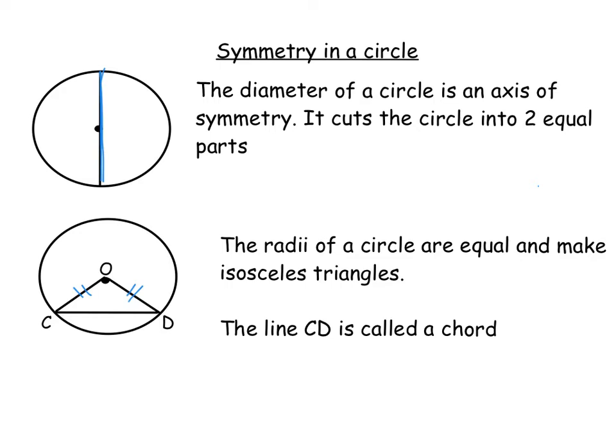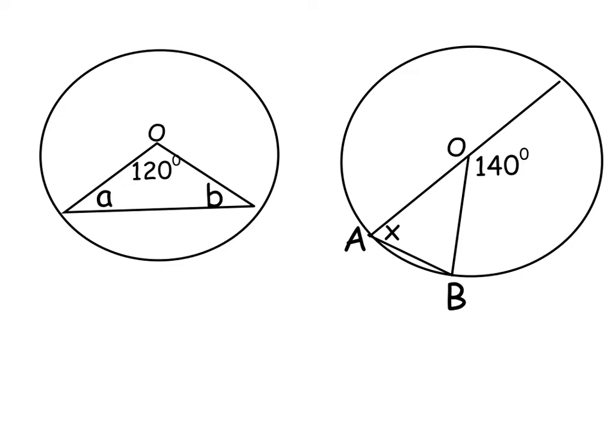So we are going to be looking for radii for the next couple of examples to identify isosceles triangles. So I've got two examples here and what I'm after are the missing angles. So on this one from O to the outside we have an isosceles triangle there. The other two angles A and B are obviously matching using the line of symmetry that's running down the middle. So to get them we're going to do 180 take away 120 which is 60. And because they match we can simply half the 60 which means that A and B are both 30 degrees.